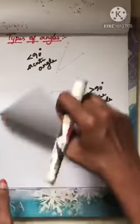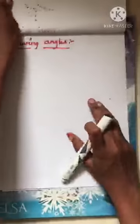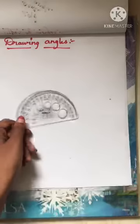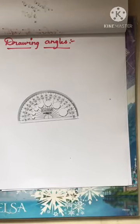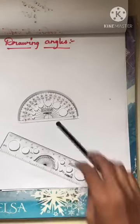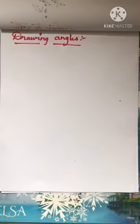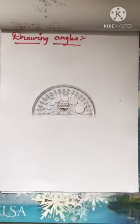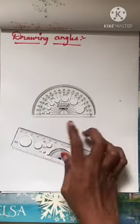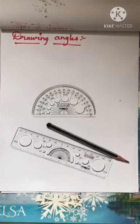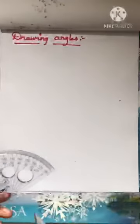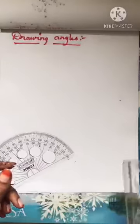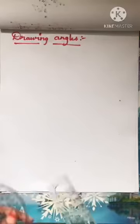Next we are going to learn drawing of an angle — how to draw an angle. Just as we used the protractor to measure the angle, we are also going to use the protractor for drawing. We will need a protractor, a ruler, and a pencil — these three tools to draw the angle.